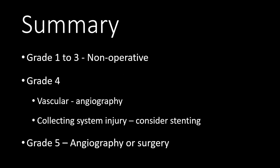In summary, grade 1 to 3 injuries are often non-operative. Grade 4 injuries can be managed conservatively but are more likely to need angiography to address bleeding or stenting to address collecting system injury. Grade 5 renal injuries often require angiography or surgery. A key pitfall of surgery for blunt renal injuries is the very high rate of nephrectomy. If possible, it is preferred to manage with angiography or stenting to preserve viable kidney tissue. If the patient is unstable, surgery may be required, and nephrectomy is often the result.